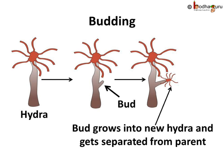Hydra is a microscopic animal — that is, it is a very small animal. In the case of hydra, one or more bulges develop on its body; these are called buds. New hydra grow from these buds. A bud keeps growing and then gets detached from the parent hydra and turns into a mature hydra. This process is called budding.